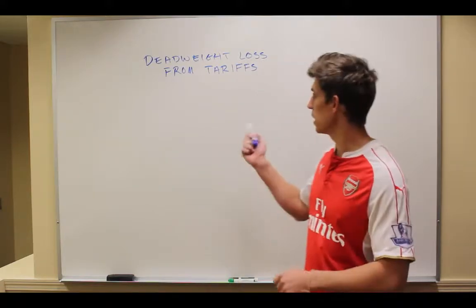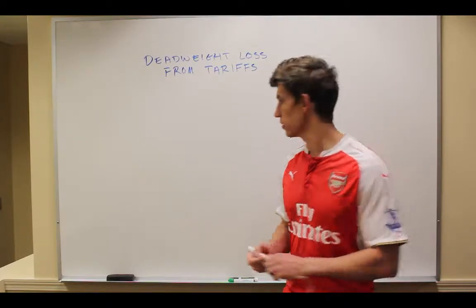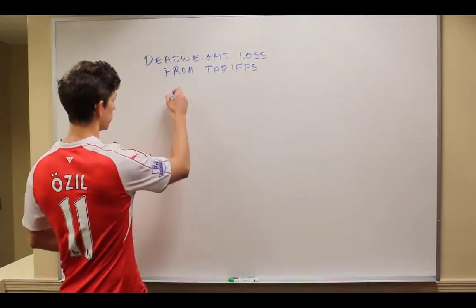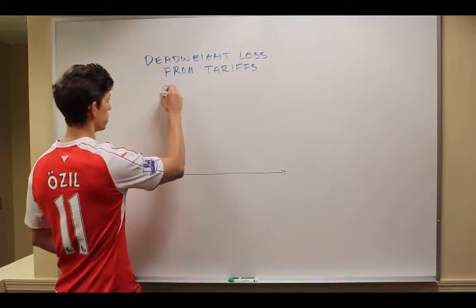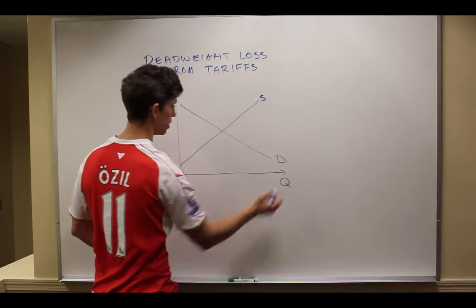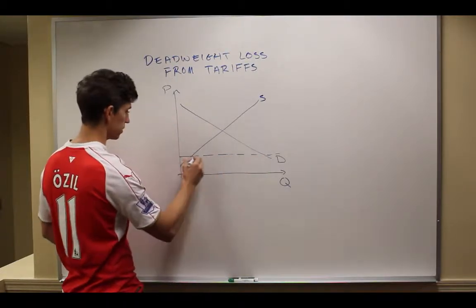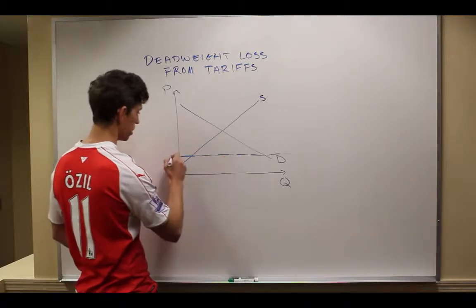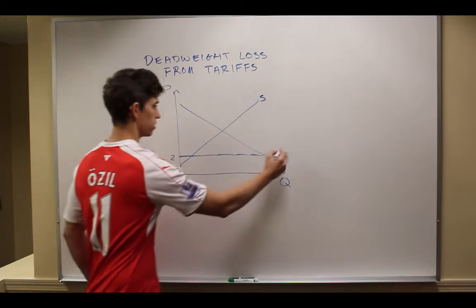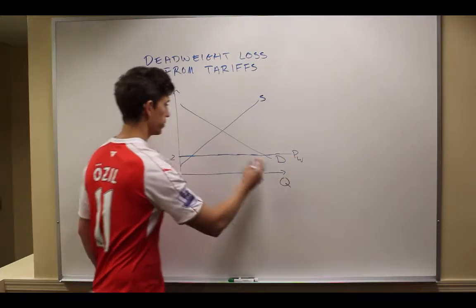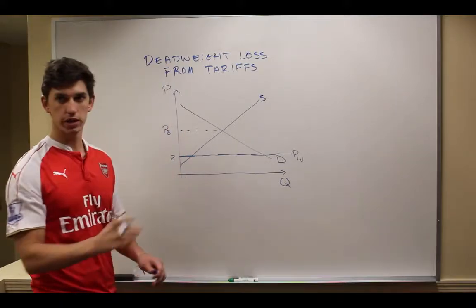Today I'm going to apply that idea to tariffs and show you what that looks like. Let's suppose that we have a country that is engaging in world trade. Let's say that the world price is right here at $2. This is the world price. Remember, this would be what their equilibrium price is if they weren't engaging in any world trade.